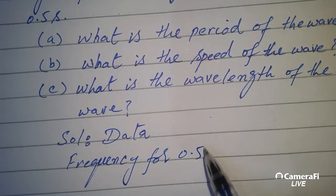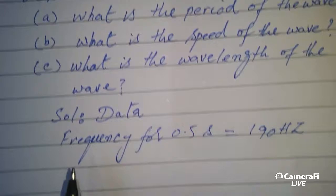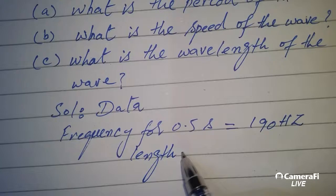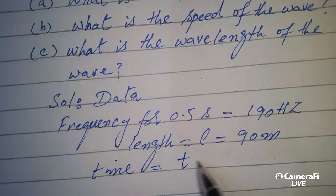Given data: Frequency for 0.5 second is equal to 190 Hz. Length L is equal to 90 m. Time t is equal to 0.5 second.